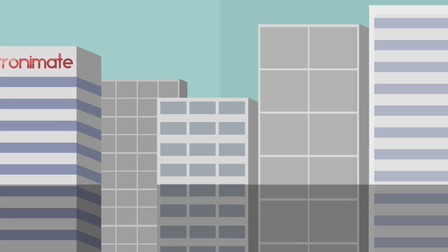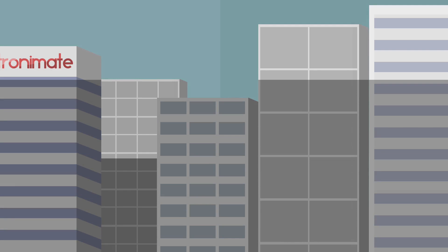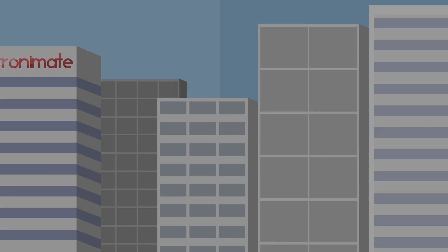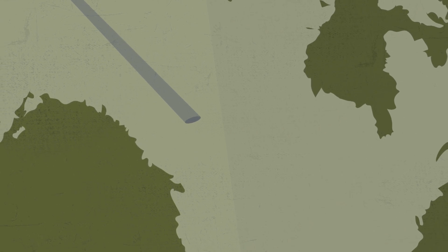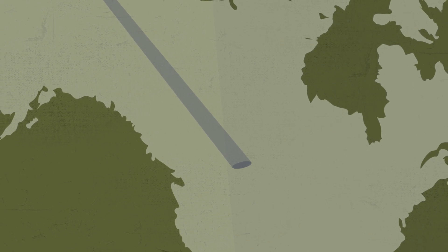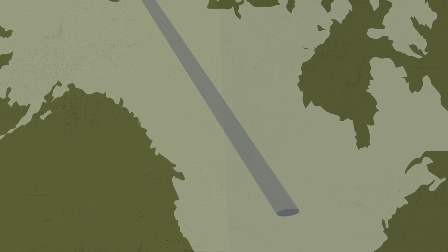The umbra's path across the Earth's surface is referred to as the path of totality. This path is only around 100 miles wide and covers only 1% of the Earth, which is why experiencing a total eclipse is rather rare.